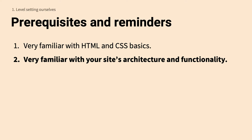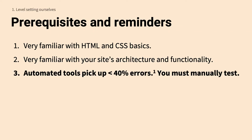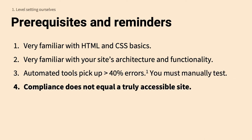You want to know the different processes and roles your site has. For instance, if you're reviewing a learning management system, you'll want to test through the student role and perhaps the faculty member role. Also know that automated tools pick up less than 40% of errors, so you have to do manual testing. Different tools pick up different errors — for example, for a list item with no parent, WAVE doesn't find the issue, AXE does, and FAE asks that the user checks for it.